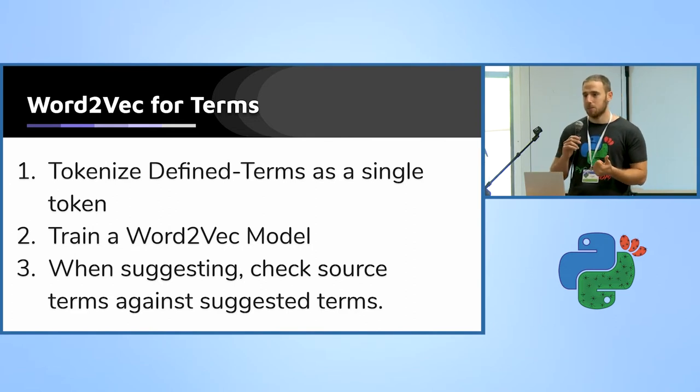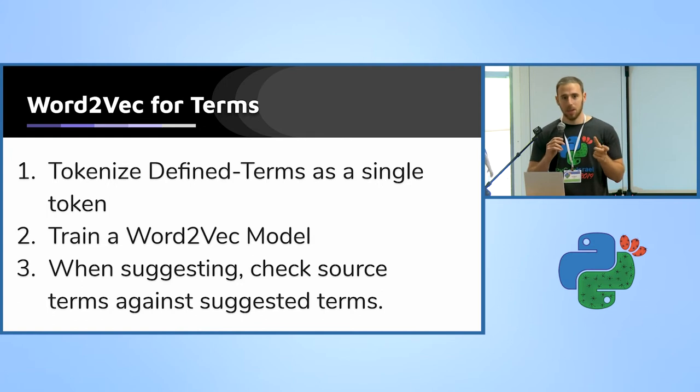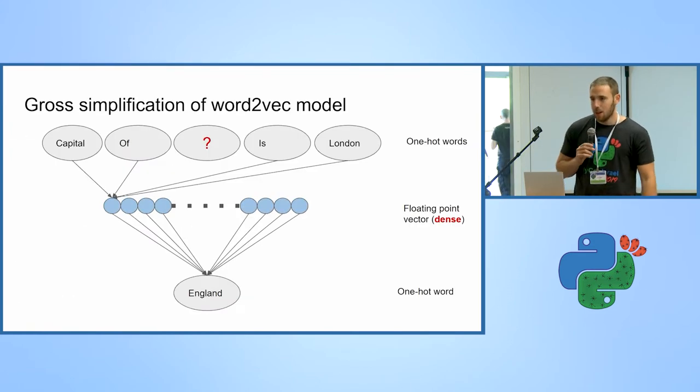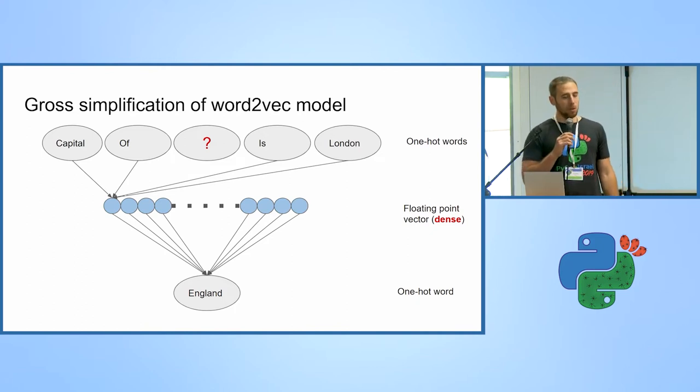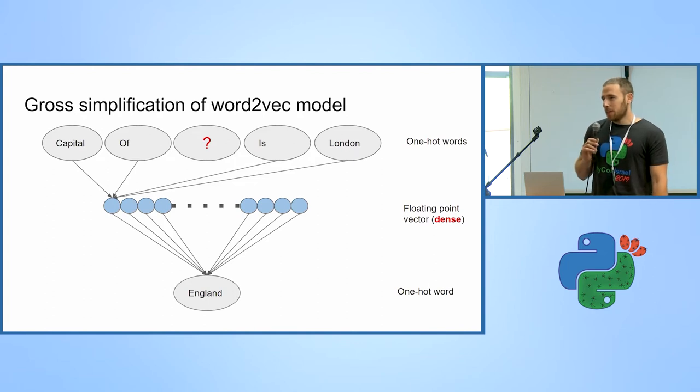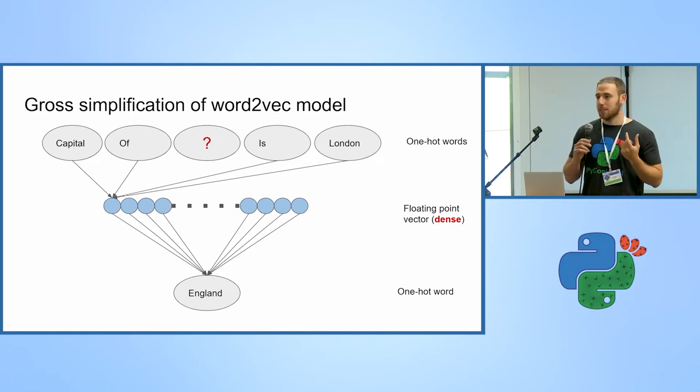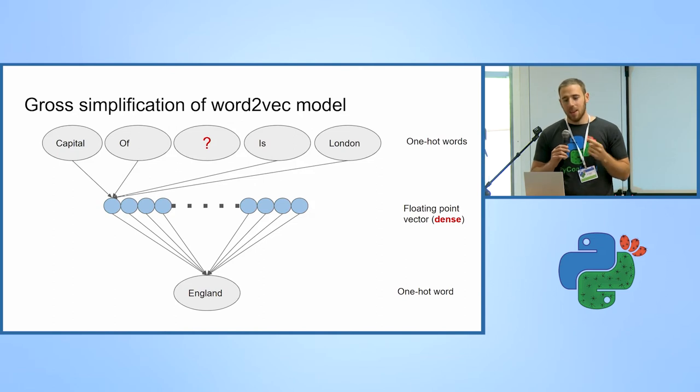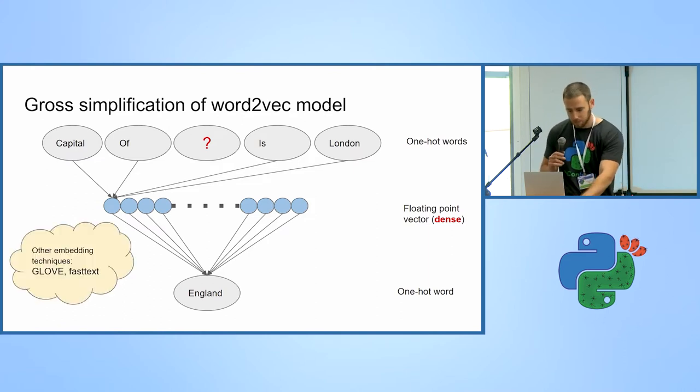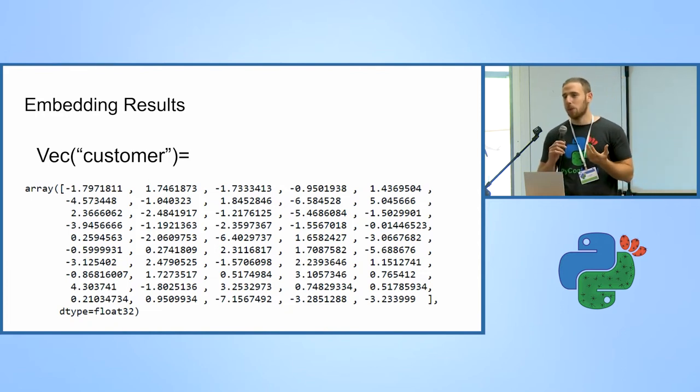And then every time we suggest a clause, we look at the Word2Vec similarity between each defined term and the defined terms from the original contract. If they are too similar, then we unite them together. A very high-level simplification of how Word2Vec works: those who train Word2Vec try to predict a center word according to context words, assuming that words that appear in similar contexts have the same meaning. For example, 'the capital of blank is London.' If you were to iterate through a lot of sentences in the corpus, hopefully the center word would look like some kind of country and state, and the context word would stay the same.